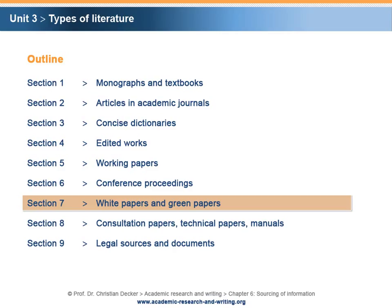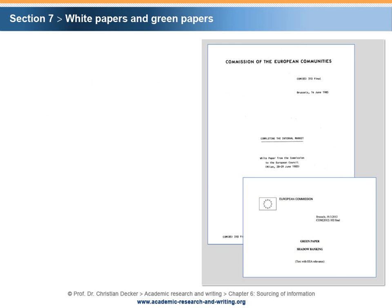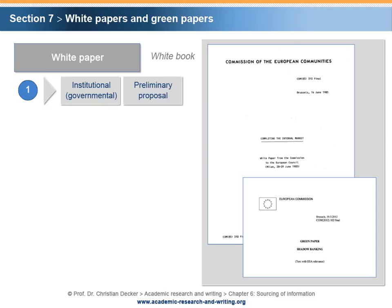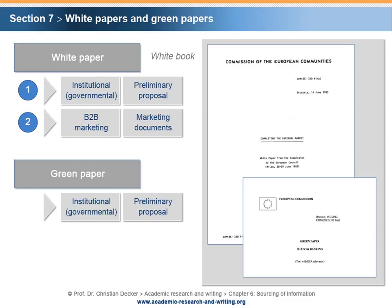Section 7: White Papers and Green Papers. The term white paper, also referred to as white book, is used in two areas. First, white papers are issued by institutions or governments in order to announce a political or regulatory position. Whether a white paper states a final version of an intended policy or is merely an intermediate process step prior to legislation depends upon the legislative circumstances of the country where it is published. Second, the term white paper is also used in business-to-business marketing for documents intended to support the marketing of products and services. A green paper is a preliminary proposal made by an institution or a government. The major purpose of a green paper is the announcement of intended policy action in order to receive feedback from interested parties. Green papers are often predecessors of white papers.